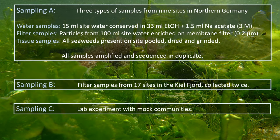Sample set B included filtered water samples from 17 sites in the Kiel Fjord. Each site was sampled once in August and once in November, which resulted in 34 samples. Sample set C was composed of tissue samples from mock communities that were generated in a lab experiment, which I will explain later.